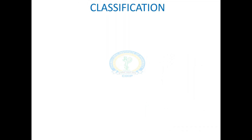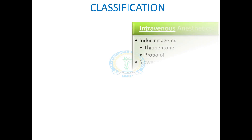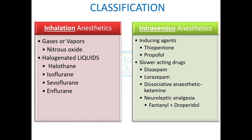Now we talk about the classification. Two major classes of general anaesthetics are inhalation anaesthetics and intravenous anaesthetics. Inhalation anaesthetics are subdivided into gases and halogenated liquids. Under gases we have nitrous oxide, and under halogenated liquids we have halothane, isoflurane, sevoflurane, and enflurane.